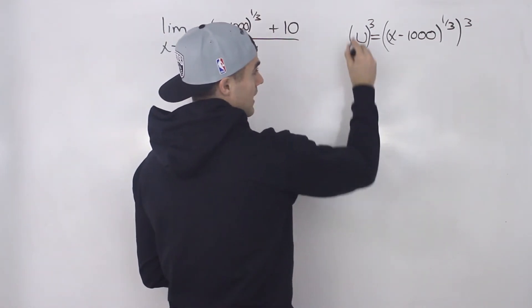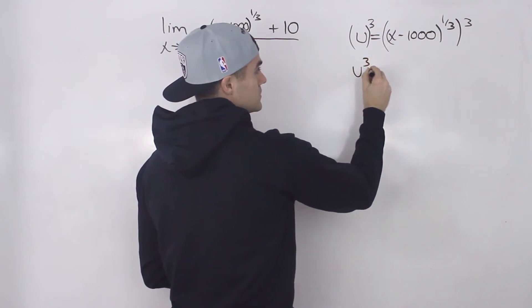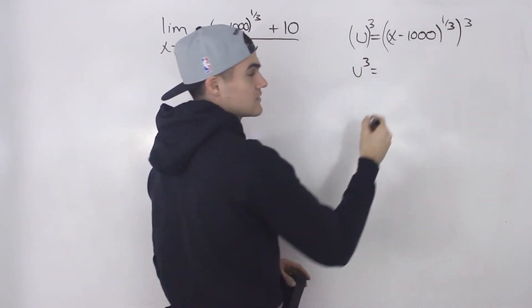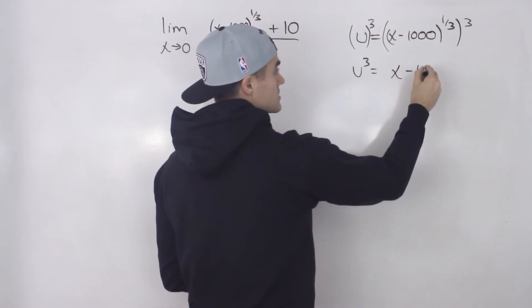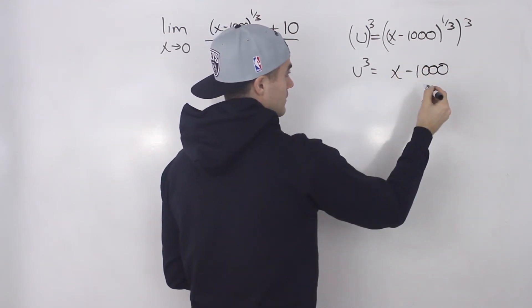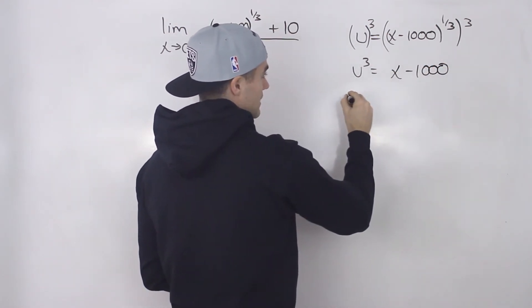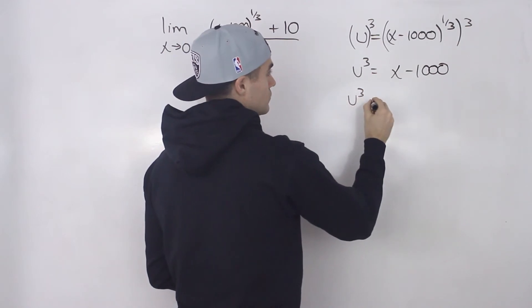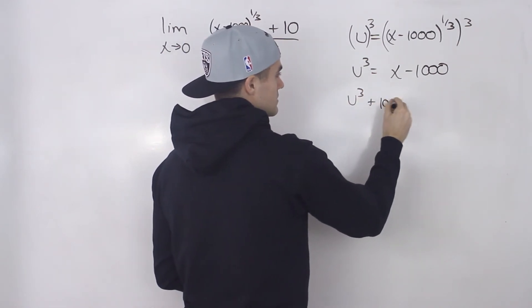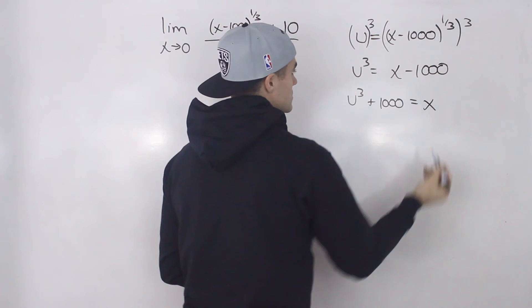And the reason why we do that: here we'll have u cubed, and then 1 over 3 times 3 gives us 1, which just gives us x minus 1,000. Then we can bring this minus 1,000 over, and we got u cubed plus 1,000 equals x.